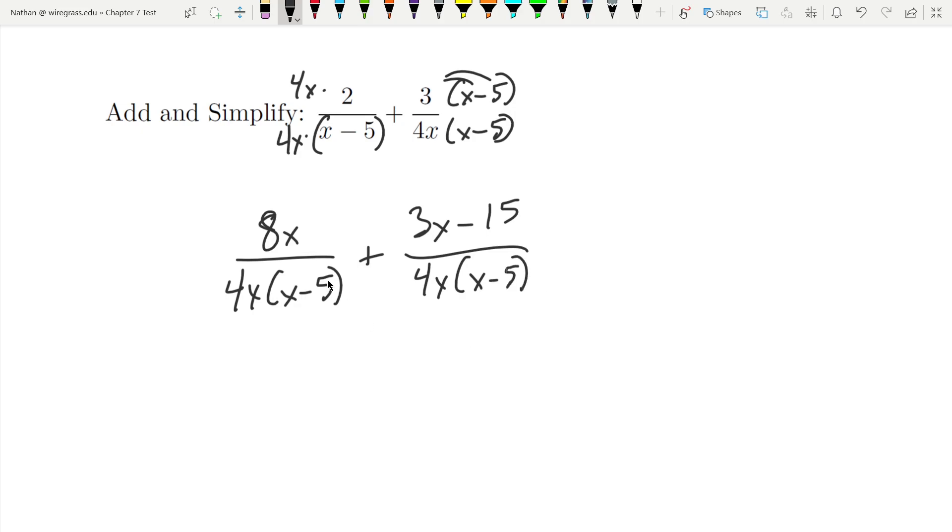And now you can see I have common denominators, so I can add the numerators together. 8x plus 3x is 11x minus 15, all over 4x times x minus 5.